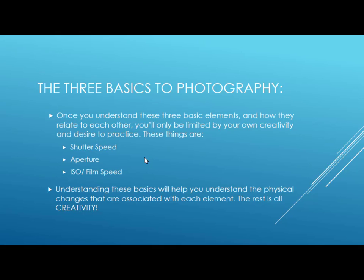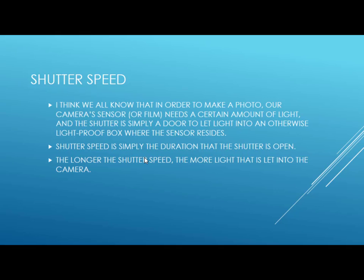The three basics of photography are shutter speed, aperture, and ISO — also called film speed. Once you understand these three basics and how they relate to each other, you'll only be limited by your own creativity. Being a really good photographer ultimately comes down to having a good eye and knowing what to shoot — that takes time and experience — but understanding these three things will help you understand your camera much better.